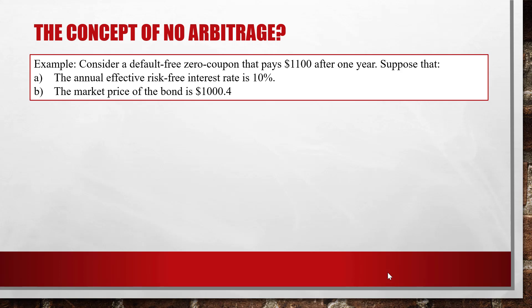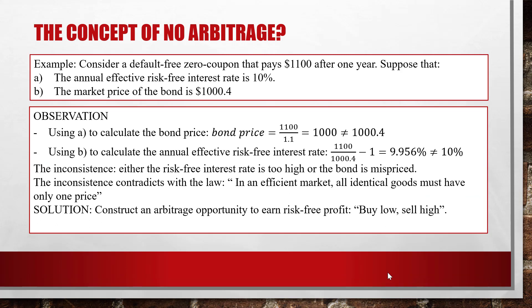So there is an inconsistency here — either the risk-free interest rate is too high, or the bond is mispriced. If you use the rate to calculate the bond price, you get $1,000, but the market price is $1,000.04. Similarly, if you use the market price to calculate the risk-free rate, you get 9.9%, which is different from 10%. This inconsistency contradicts the law that in an efficient market, all identical goods must have only one price.